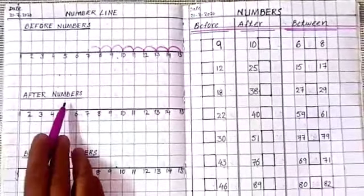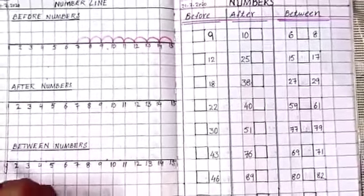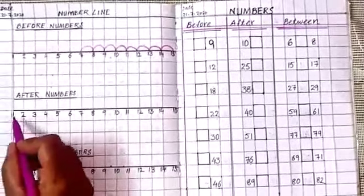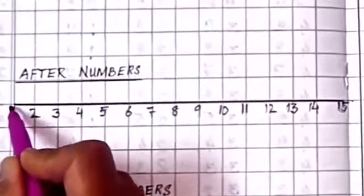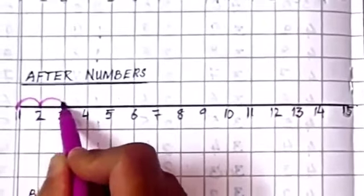Now look here, after numbers. So this is the number line of after numbers. In after numbers, you will move in forward counting. Right? So that is very easy. After 1, 2. After 2, 3. After 3, 4.